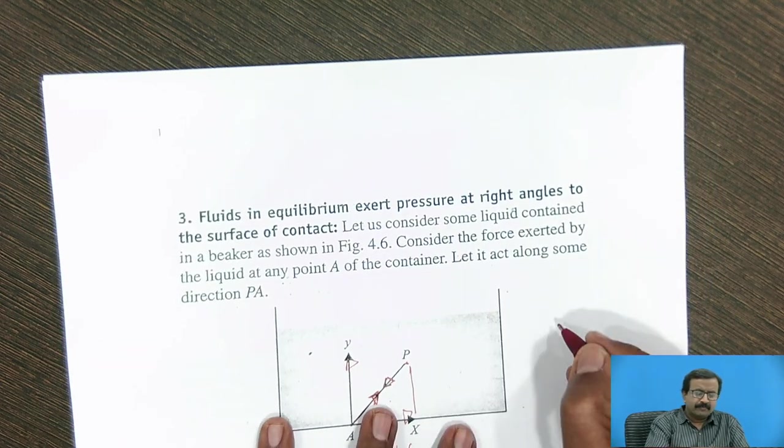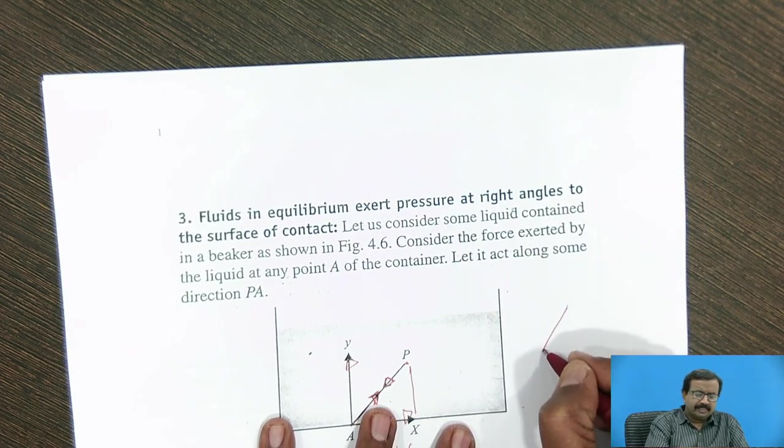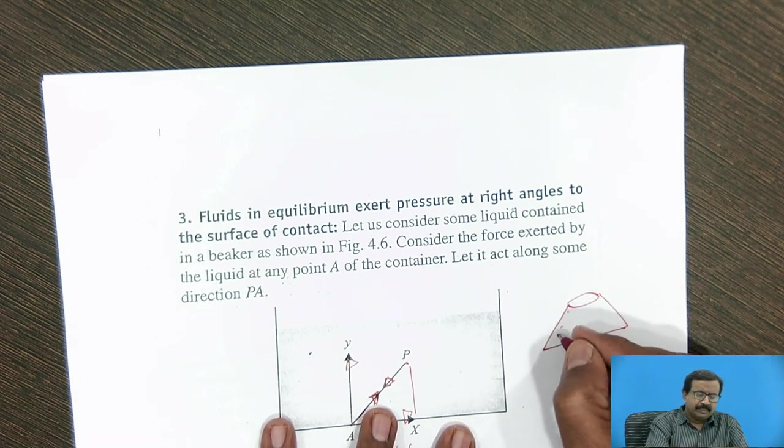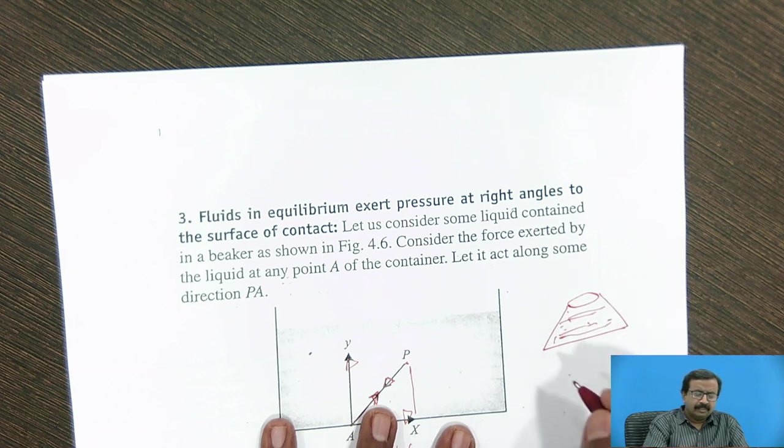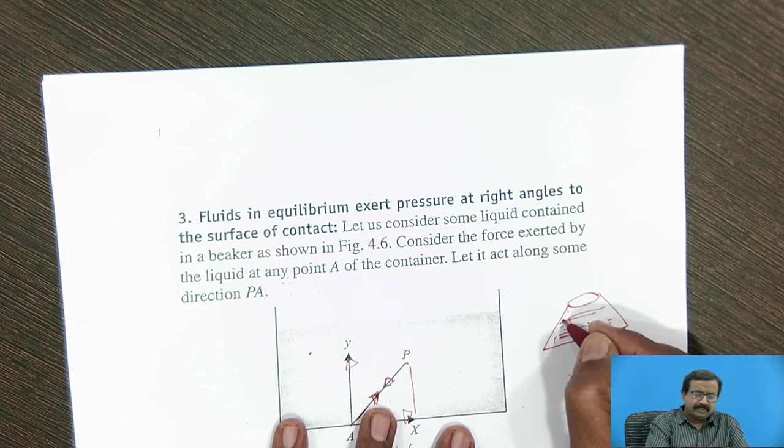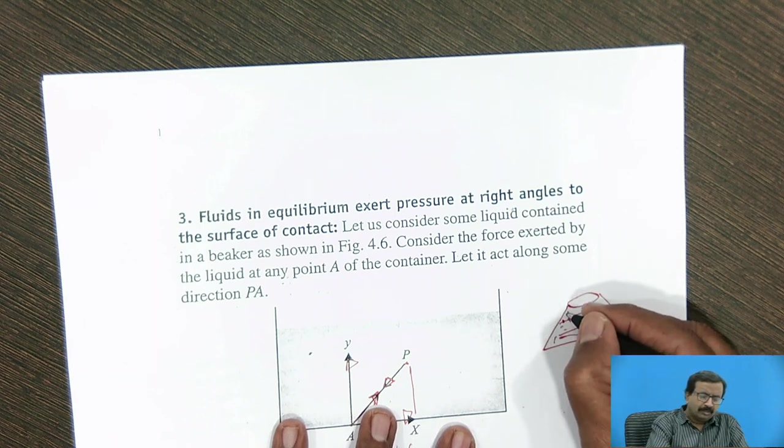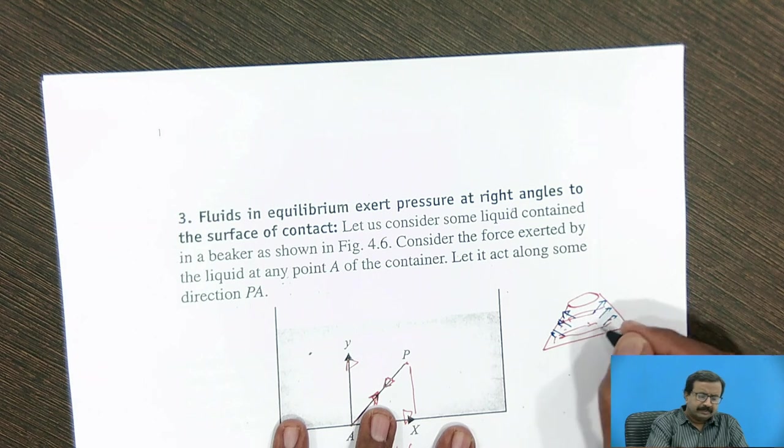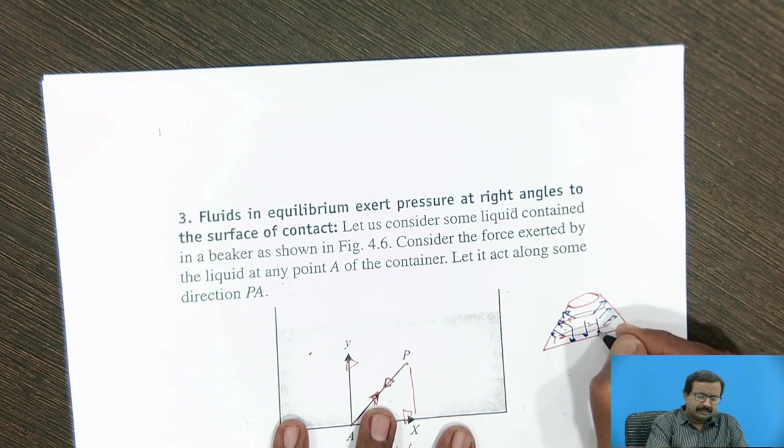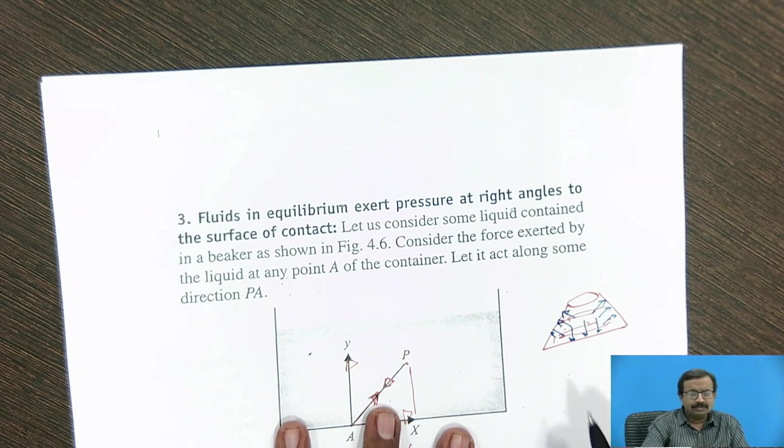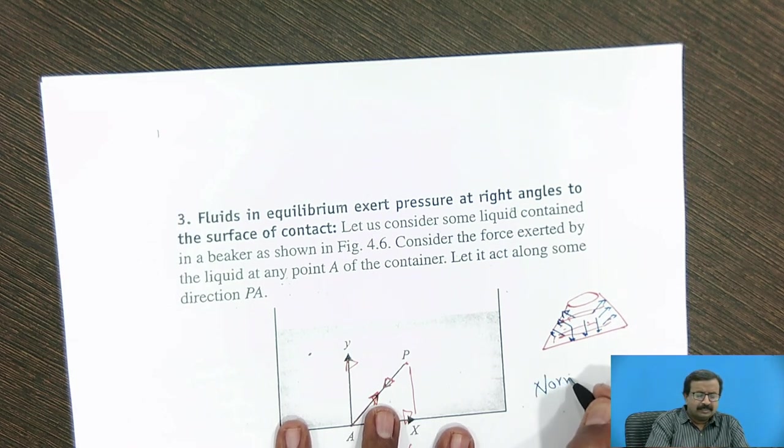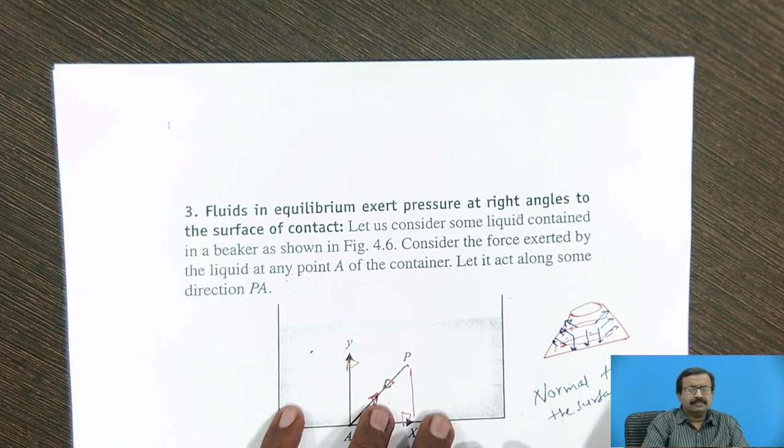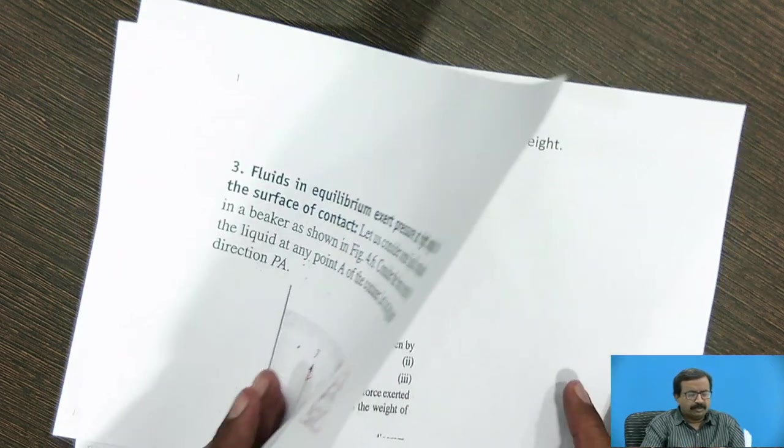And that is evident, suppose I have a container like this, in which I fill the liquid. So the pressure exerted is shown essentially along this direction, along this direction. It is along this direction. So pressure is always normal to the surface. It is always normal to the surface. So this is a very important property.